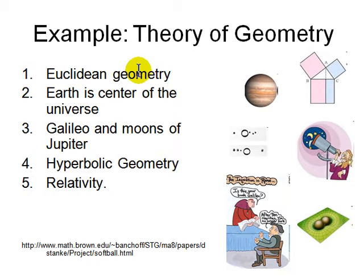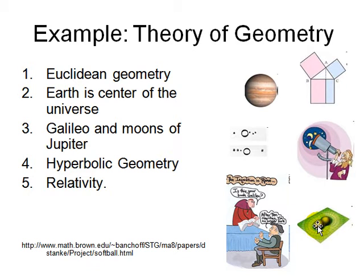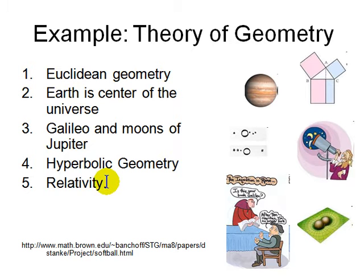We started with Euclidean geometry from around two thousand years ago. Then came hyperbolic geometry, in which space is not flat but curved. For two thousand years this didn't matter much, but when we developed the theory of relativity and atomic energy, we had to revise Euclidean geometry and adopt hyperbolic geometry — a refinement needed by the standard theory of relativity.